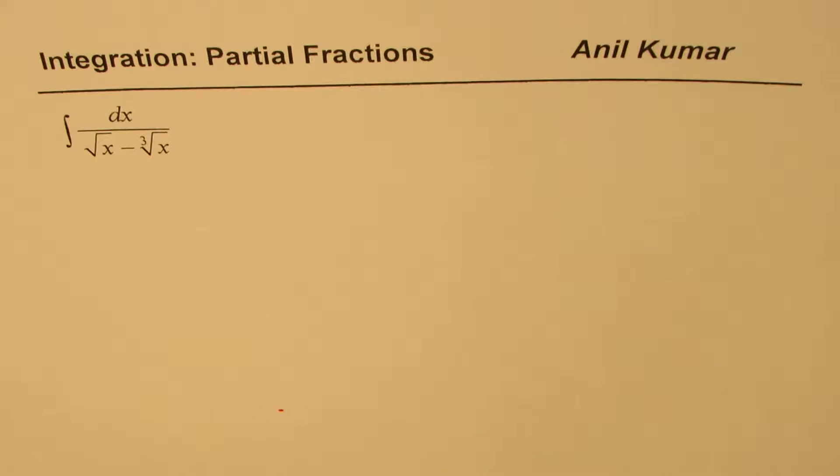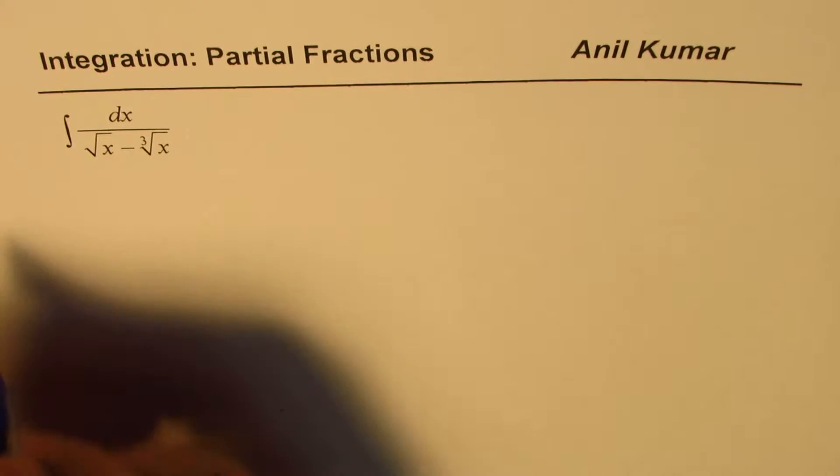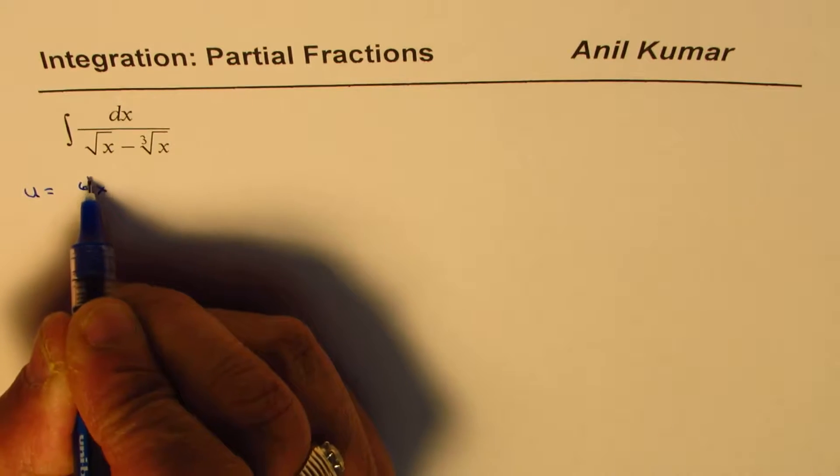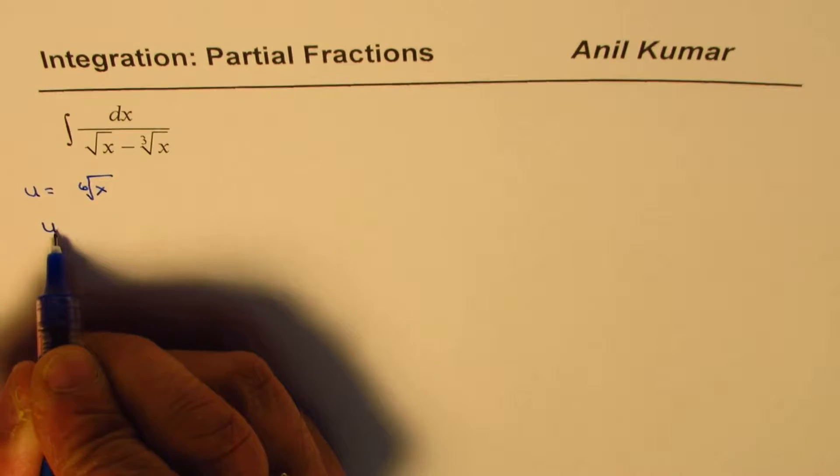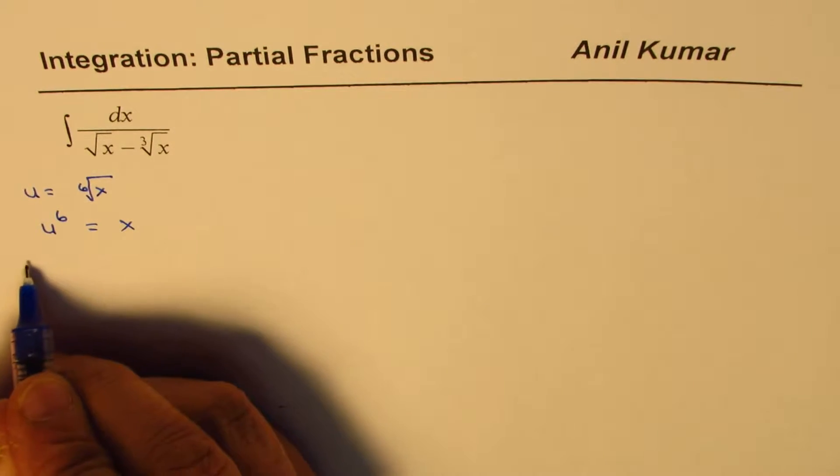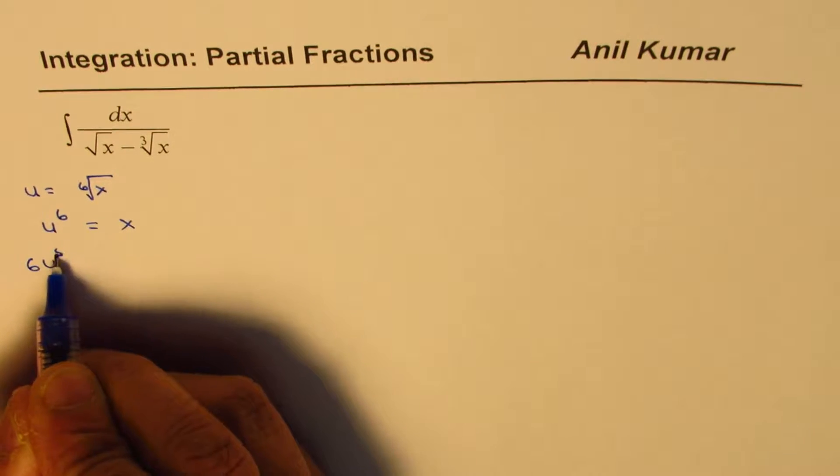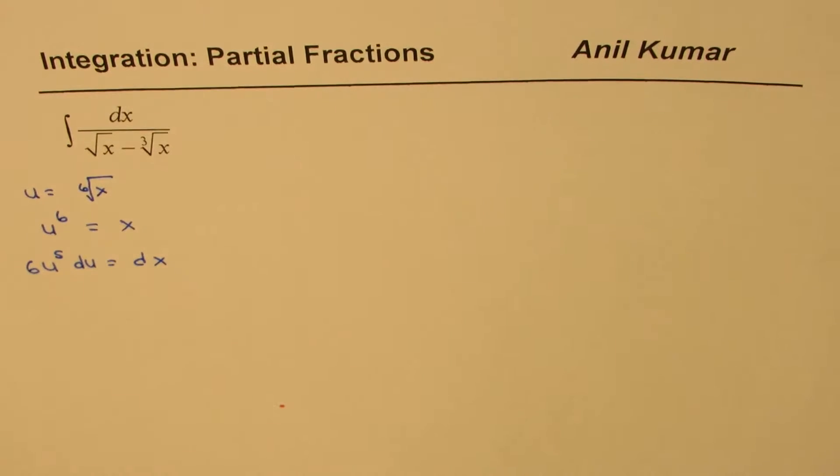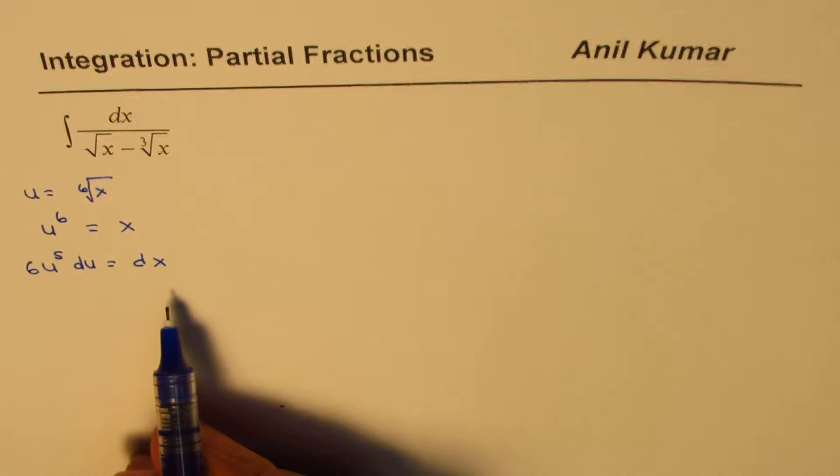Now in such questions, a good substitute could be if I could write u equals to 6th root of x, right? So that gives you u to the power of 6 as equals to x. And if I take derivatives, I take 6u to the power of 5 du equals to dx. So we get this kind of a derivative here.